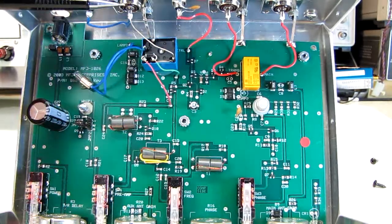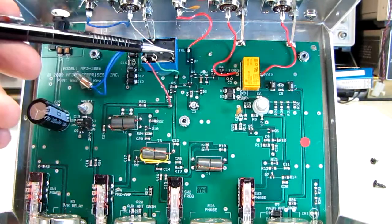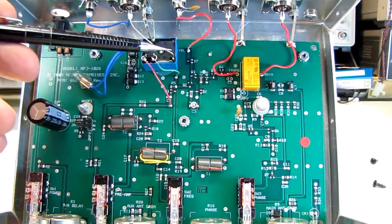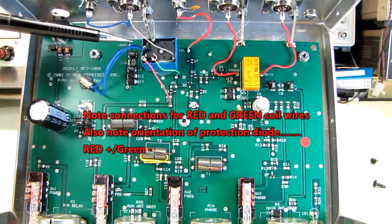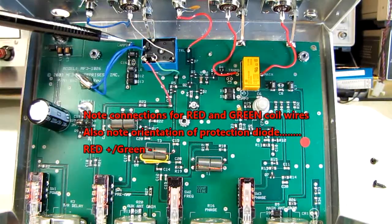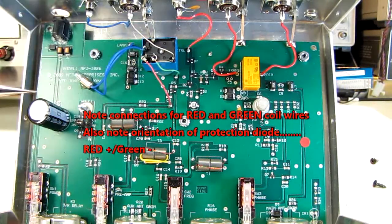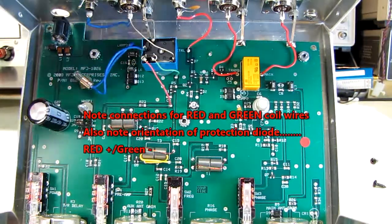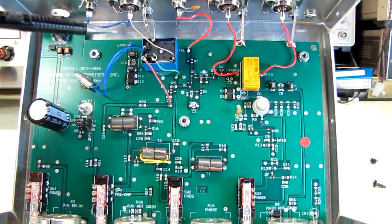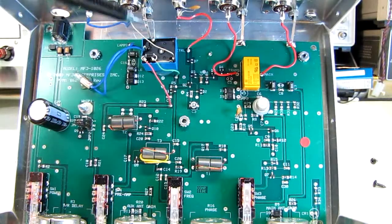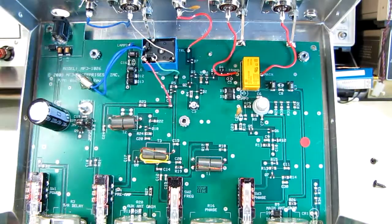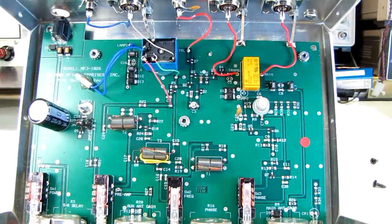We come in from the auxiliary antenna connection to the common contact, and during receive operation, it goes from there to this contact, through this lamp fuse, and down to the preamplifier. As soon as the transmit is engaged, the contact switches over to this ground, and directly grounds the input from the auxiliary antenna.